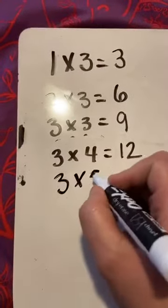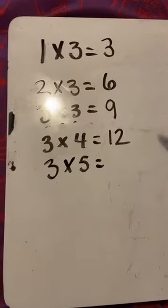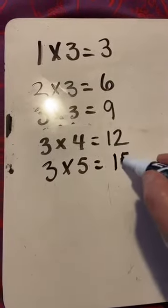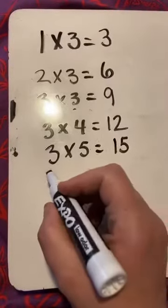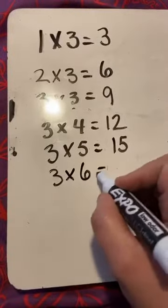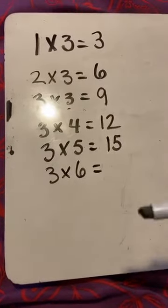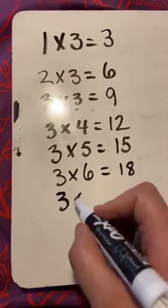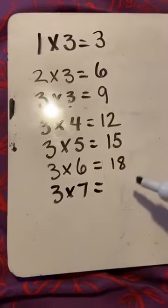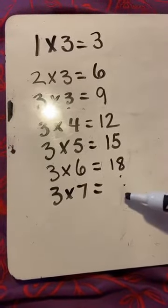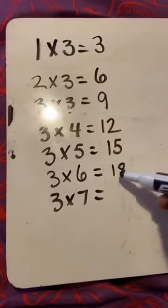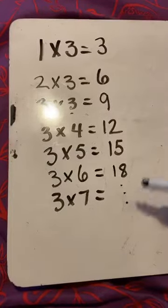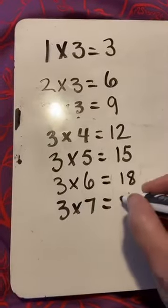3 times 5. We know this one. We use the clock to find it. So add on 3. 12, 13, 14. What's going to be my answer? 15. You're right. So 3 times 6. What's 3 times 6 if I'm adding on 3? 15, 16, 17, 18. Good work. 3 times 7. Add on 3. 18, 19, 20, 21. Right? 18, 19, 20, 21. So 3 times 7 is 21.